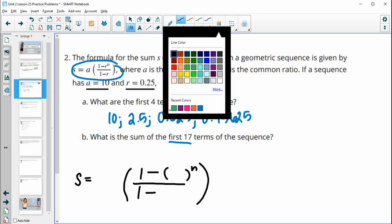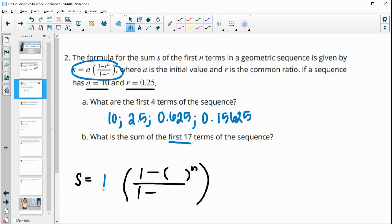So go ahead and type in the initial value, which is 10, and then 1 minus the rate, so this is that 0.25, and then we know n, so n is the number of terms. So we're doing the first 17 terms here, so this is going to be to the 17th power, and then on the bottom, 1 minus that rate again.